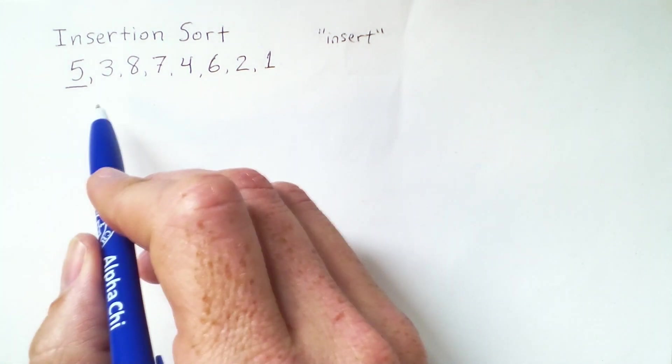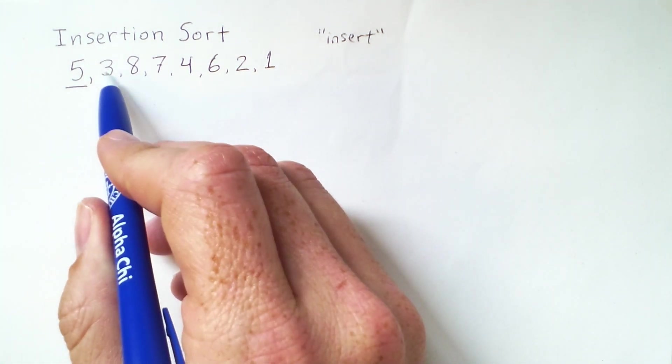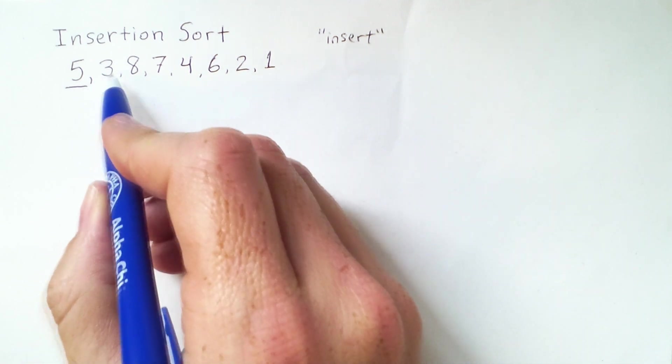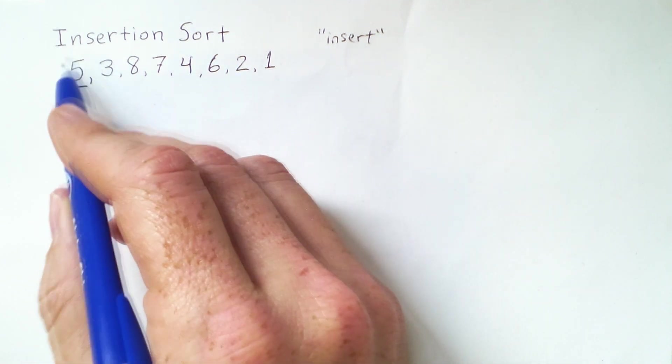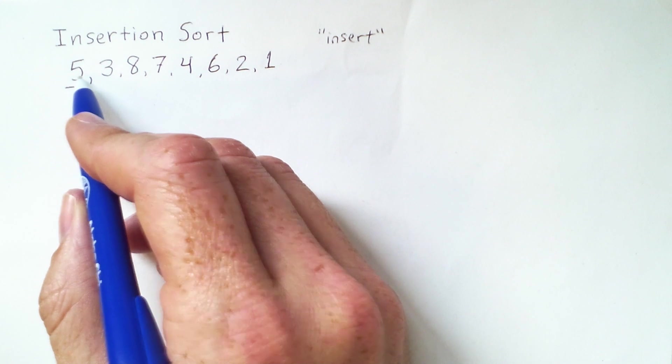The first element that I will try to insert is the 3. Specifically, I'm going to insert the 3 into this sorted subarray that only has a 5.